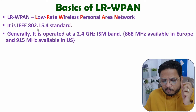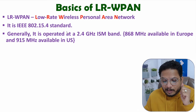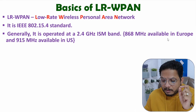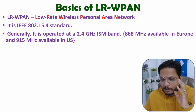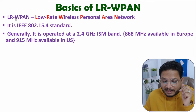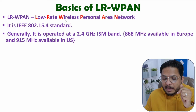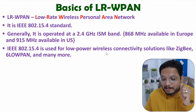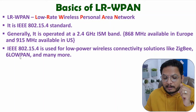Majority of devices with this standard operate at 2.4 GHz ISM band. At 2.4 GHz, maximum data rate will be 250 kbps. With the frequencies available in Europe and US, the maximum data rate is from 20 kHz to 40 kHz. So with LRWPAN, maximum data rate — the low rate — will be around 250 kbps, by which we will have a wireless personal area network. This standard is used for low power wireless connectivity solutions like Zigbee and 6LoWPAN.